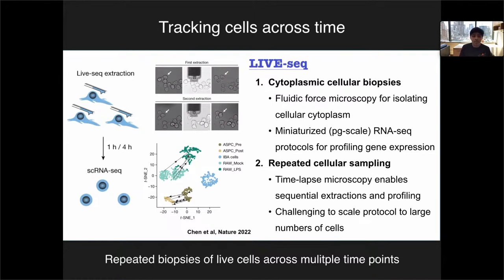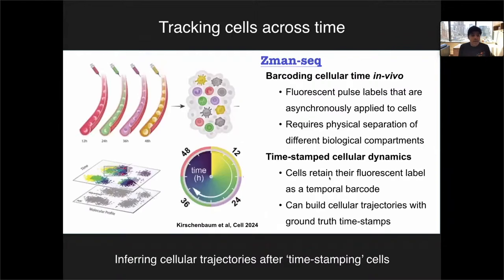As exciting as LiveSeq is, the question is: is there something in the middle — something that does have experimental ground truth but is also highly scalable? This year, Ido Amit's lab introduced Z-ManSeq, which references the Hebrew name for time. The way this works is you inject fluorescently labeled antibodies into a mouse, and those antibodies attach themselves to circulating immune cells. You can use different colors — at 12 hours you can label a subset of immune cells red, at 24 hours you can label them green, and so on.